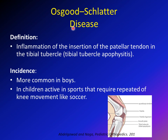So what is Osgood-Schlatter disease? It's inflammation of the insertion of the patellar tendon in the tibial tubercle or tibial apophysis — that's why it's sometimes called tibial tubercle apophysitis. Osgood-Schlatter is inflammation of that area of the tibia, which we call the tibial tubercle or tibial apophysis.